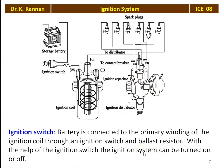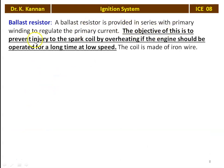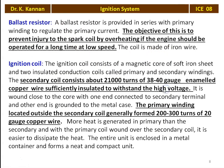The ballast resistor is provided in series with the primary winding to regulate the primary current. The objective is to prevent the ignition coil from overheating if the engine is operated for a long time at low speed. The material used for the ballast resistor wire is iron wire.